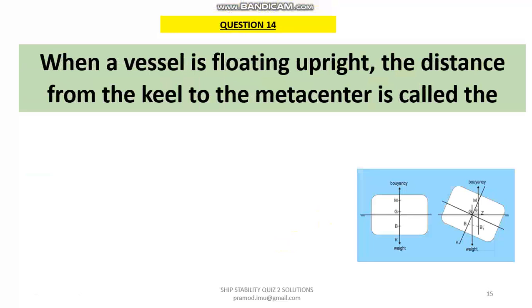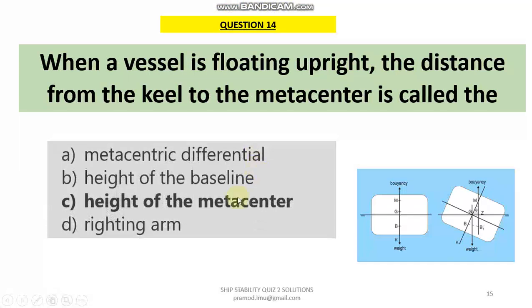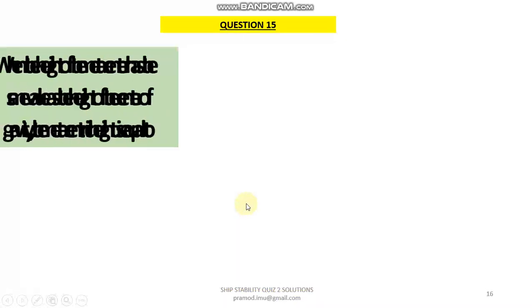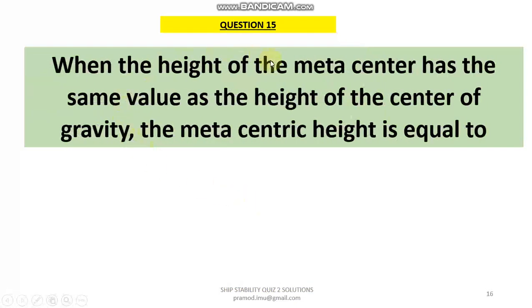Question 14: When a vessel is floating upright, the distance from the keel to the metacentre is what we call the height of metacentre, denoted KM. KM will differ in the transverse direction as well as the longitudinal direction.